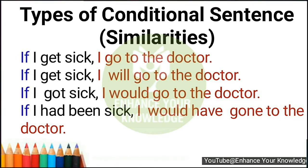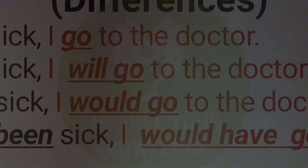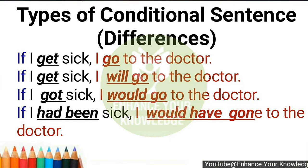Now we'll learn about the differences. All these sentences are quite similar, but there are some clear differences — it's all in the verbs. You can see I have underlined the verbs in all these sentences. Because of the verbs, the meaning is different too. We use each type of sentence in a different situation. There are: zero conditional, first conditional, second conditional, and third conditional.